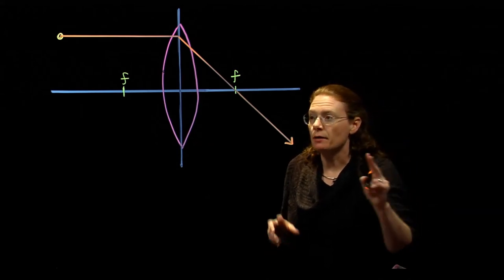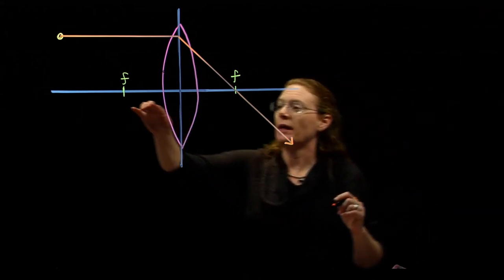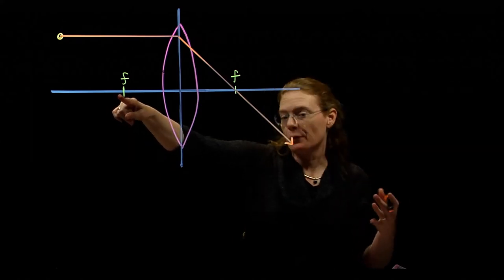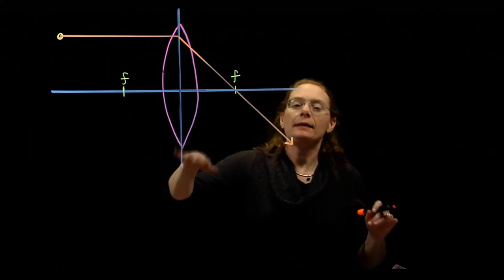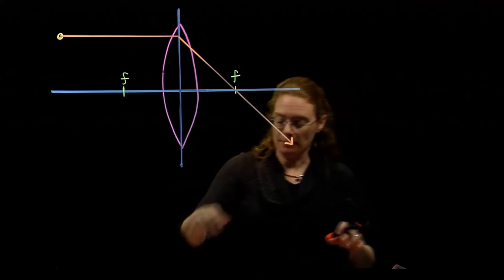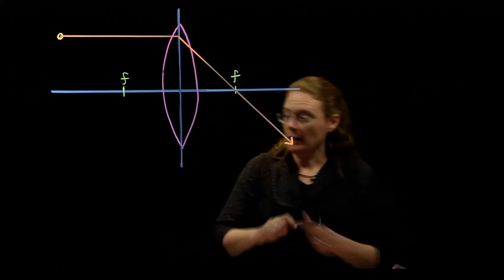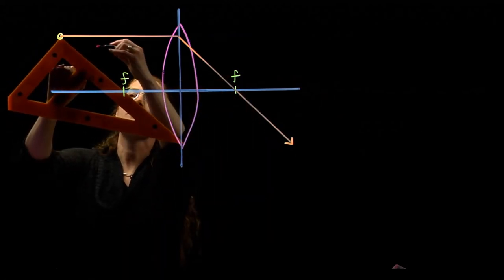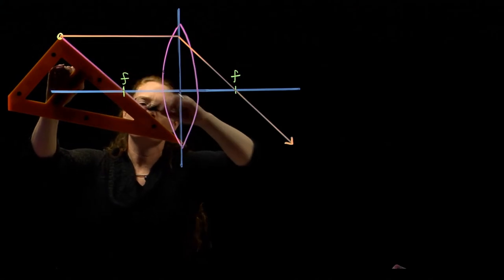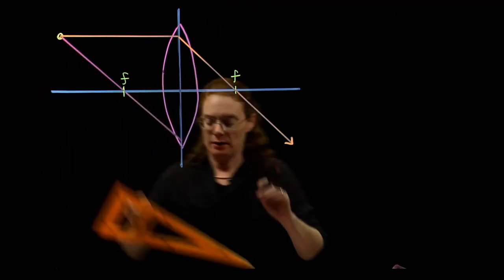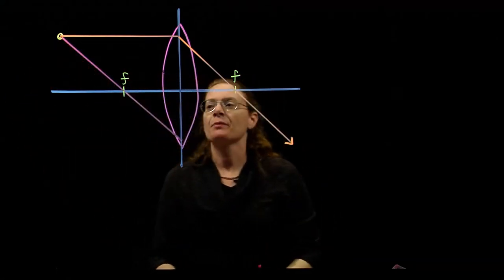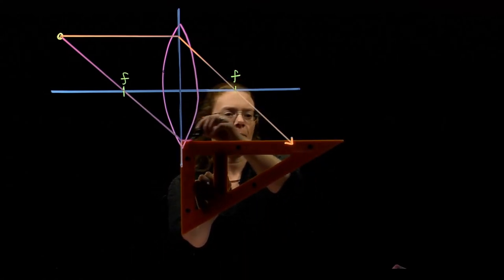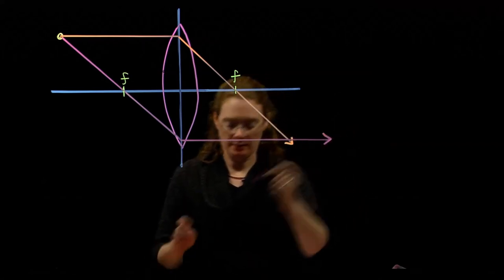The second ray uses the other definition of the focal point, where if we have a light ray that starts at the focal point, or goes through the focal point, then it's going to leave going out parallel. So our second ray is one that goes through the closer focal. Start at our object, go through the closer focal, and then as soon as it hits that center line, we have it going out parallel. It's looking pretty good.